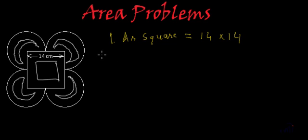And what is the next step? Next step is we have to find the area of circle. Area of the circle is pi r square where pi is 22 by 7, and r is the radius.